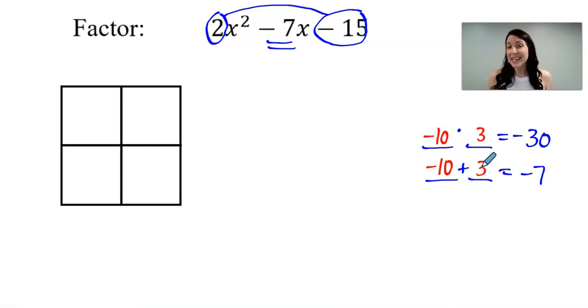Now what we have done is we've found a way to rewrite this middle term a different way. So I'm going to keep the first term the same, 2x squared. And then instead of negative 7x, I'm going to rewrite this as negative 10x plus 3x. And I got those numbers from over here to the right. Then I keep my constant negative 15.